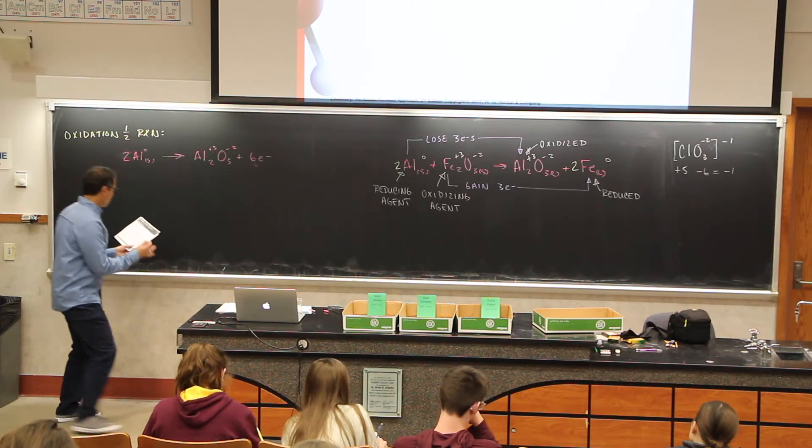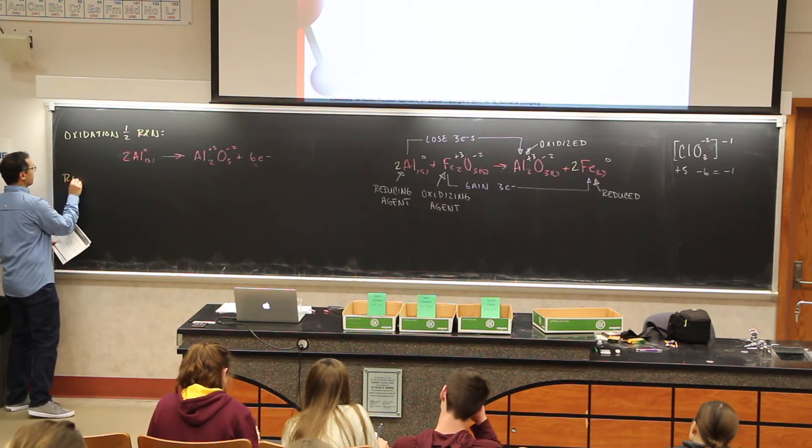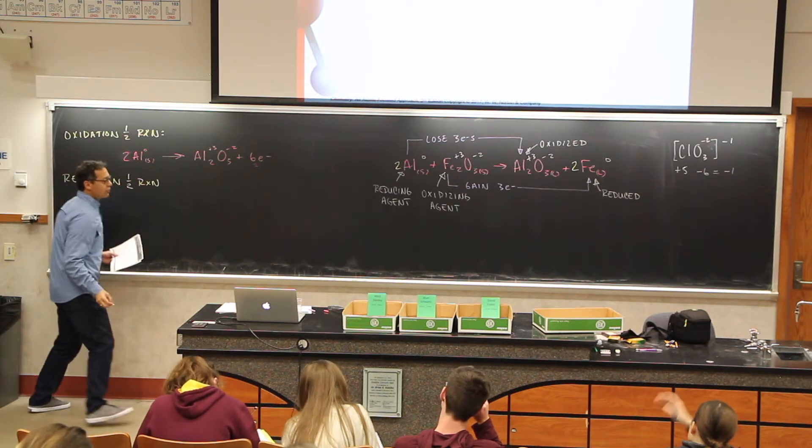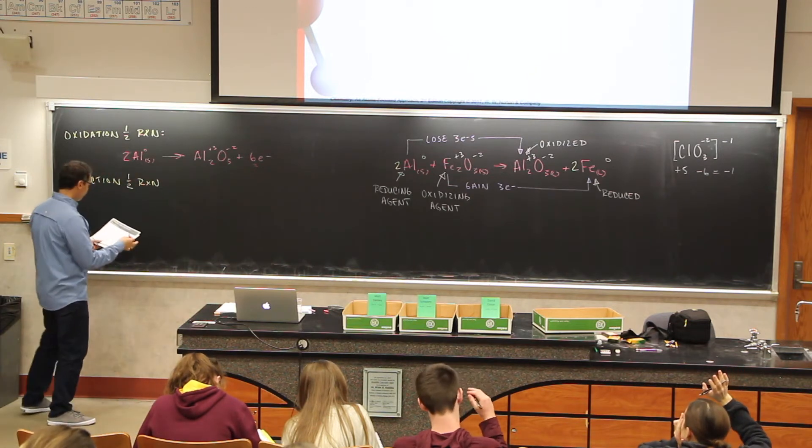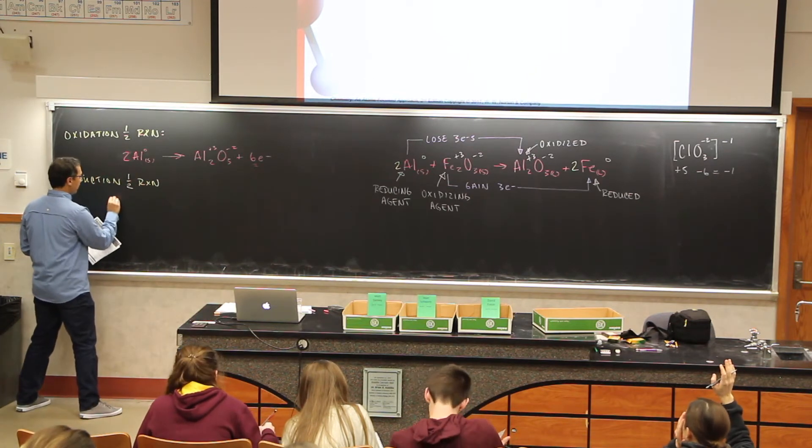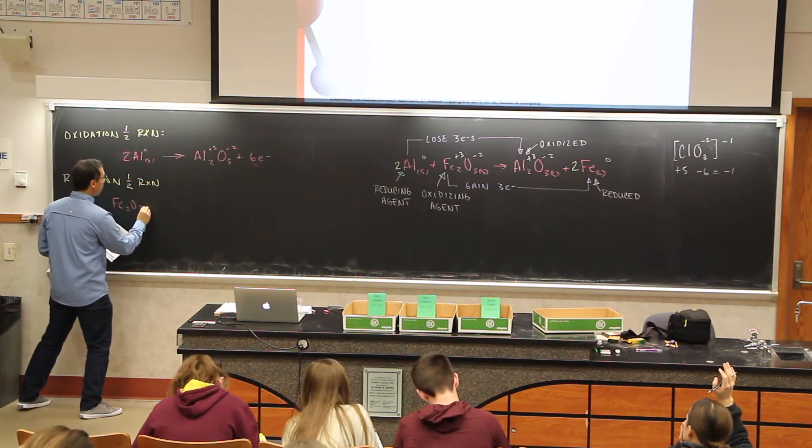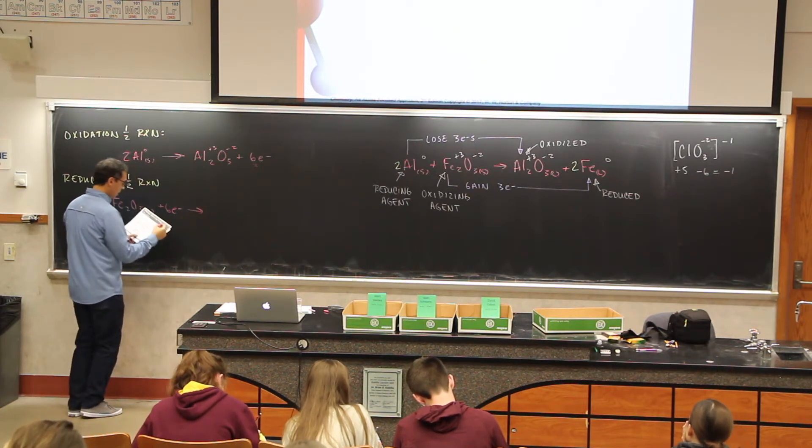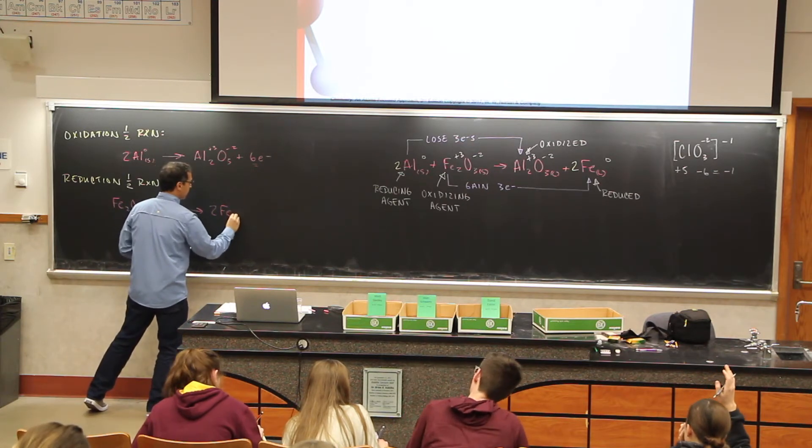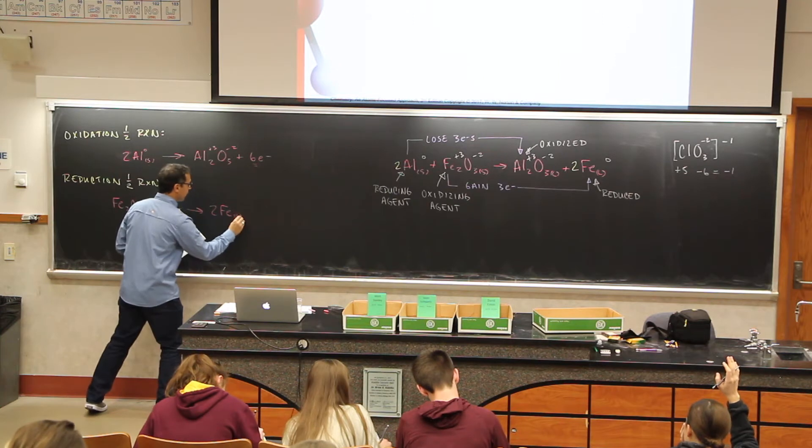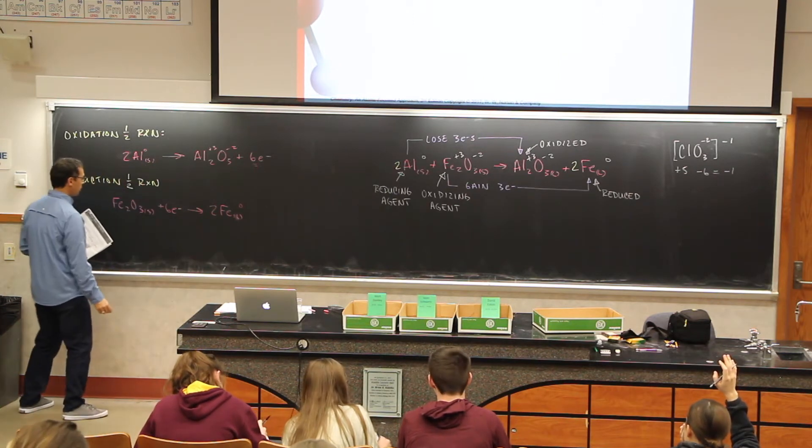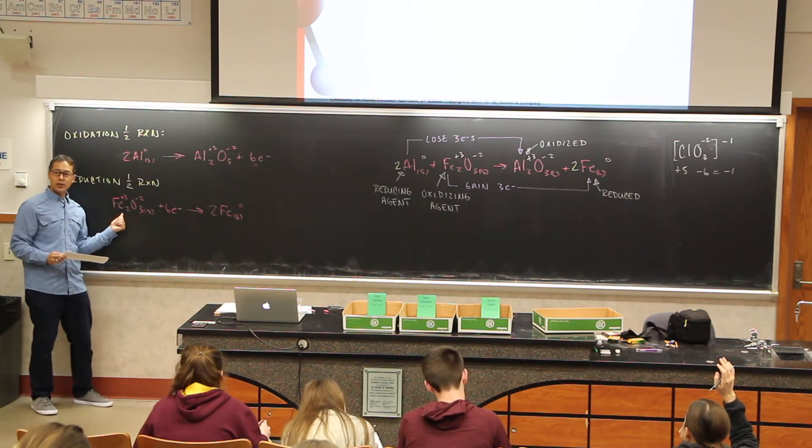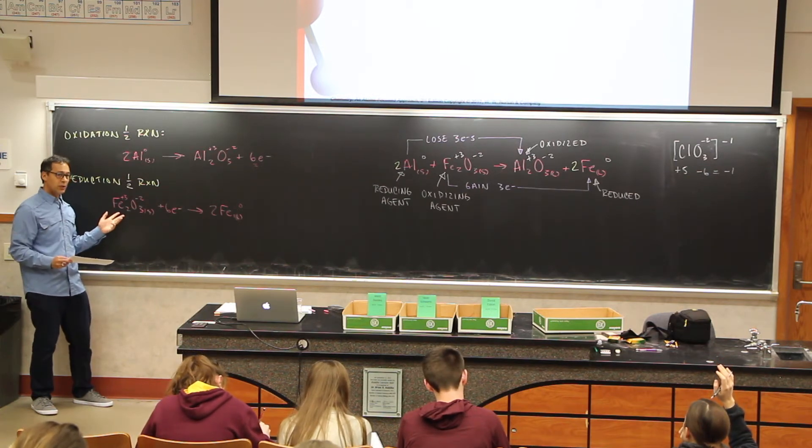So that's the oxidation half reaction. The reduction half reaction is going to be the opposite. This is going to be our iron. So with our iron we have Fe2O3 and six electrons becomes two Fe solid on this side. Well, liquid on this side. Oxidation number is zero. Oxidation number over here is plus three minus two. So each iron atom loses three electrons. There's two of them, which gives us a total of six.